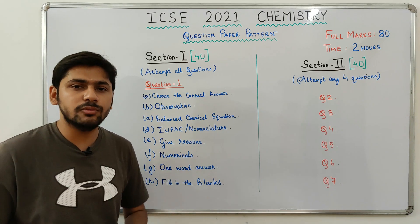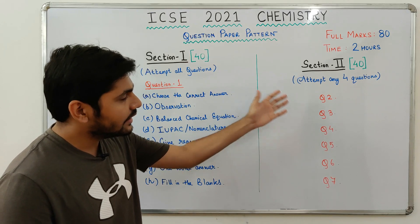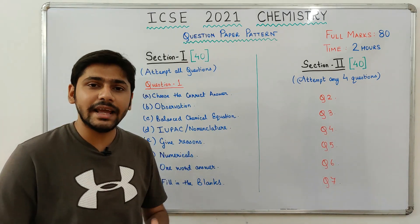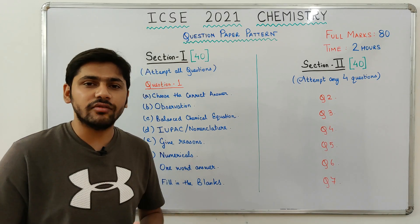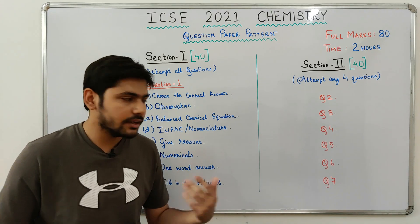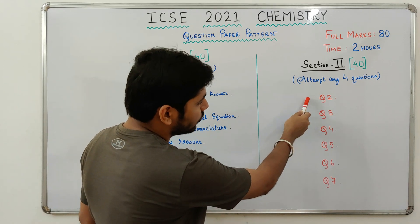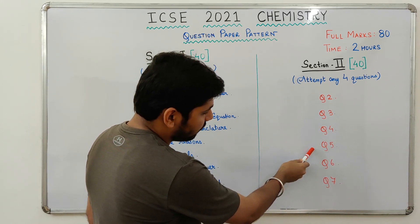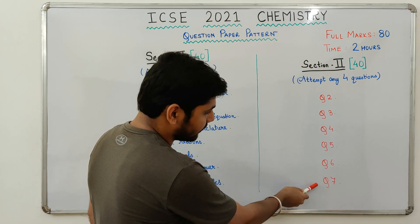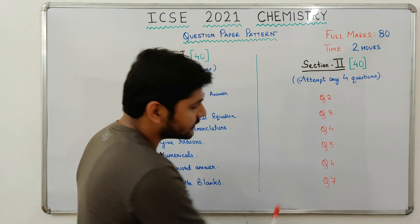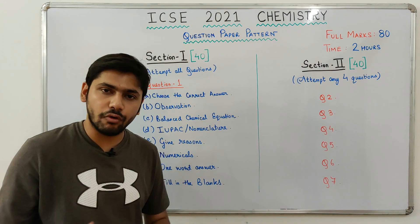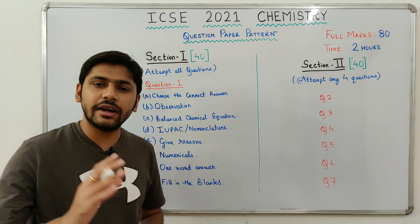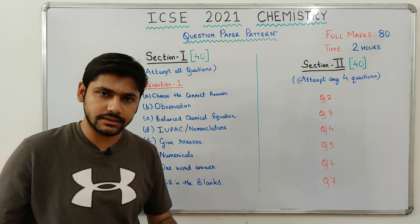Now let's move on to Section 2, which is also worth 40 marks. In Section 2 you will have to attempt any 4 questions out of the 6 questions given — Questions 2, 3, 4, 5, 6, and 7. All questions are of 10 marks each, so 4 × 10 gives you 40 marks.